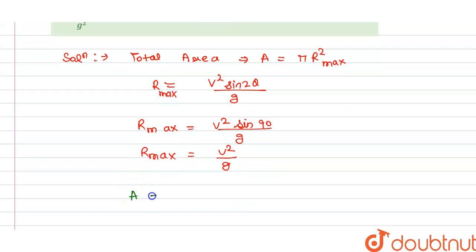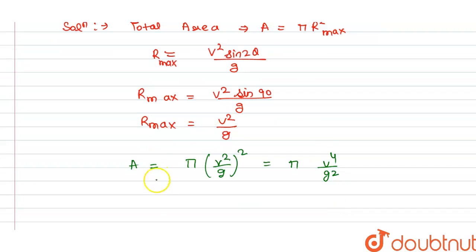So our total area A around the fountain is equals to π into R²max. So we get (v/g)² which gives us π v⁴/g².